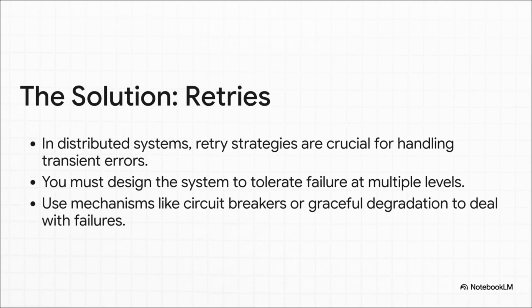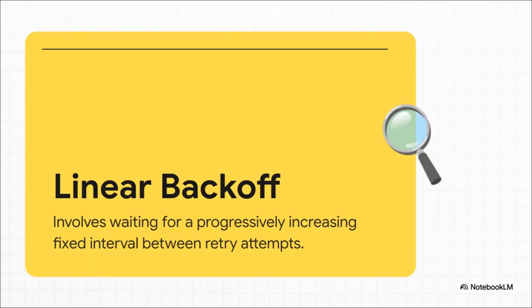This is absolutely fundamental for building systems that don't fall over, but it raises a really important question: how exactly should we retry? Just hammering the system with instant retries can actually make a bad situation a whole lot worse. One common tactic is called linear backoff — you wait a little longer between each retry. You try, wait two seconds, try again, wait four seconds, try again, wait six seconds, and so on. It's simple, but it has a massive flaw. If a bunch of tasks fail at the same time, they might all retry at the exact same moments, creating what's called a retry storm and totally overwhelming the service.